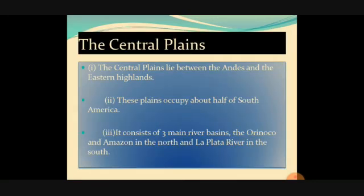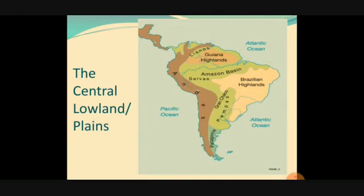The third physical feature is the Central Plains. The Central Plains lie between the Andes and the Eastern Highlands. These plains occupy about half of South America. It consists of three main river basins: the Orinoco and the Amazon in the north, and the La Plata River in the south. The Central Plains occupy almost the middle portion of South America.